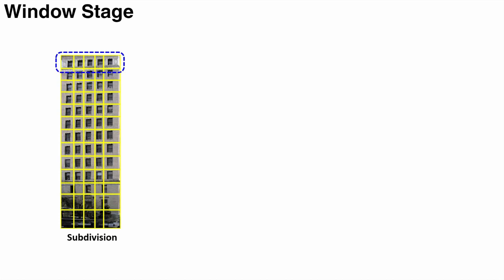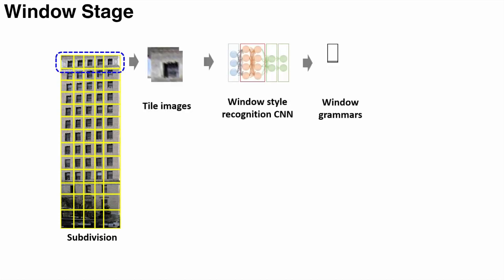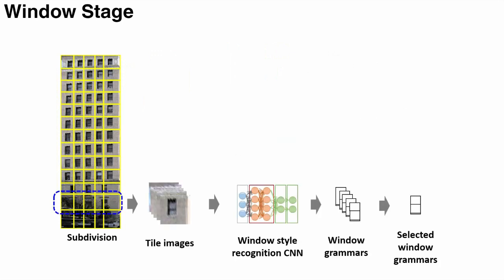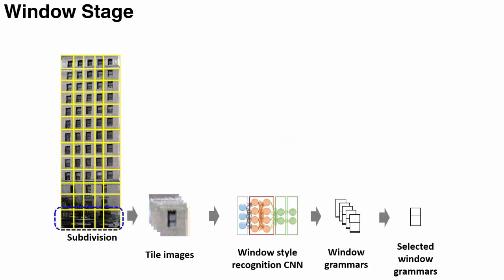In the third and last stage, a Window Style Recognition CNN is applied to each tile image to recognize the window or door style. Our facade grammar defines one or multiple non-terminals for the windows. For windows with the same known terminal, the best window style is selected by maximum vote. We repeat this process for each known terminal to select a window grammar.